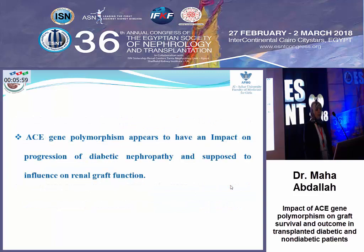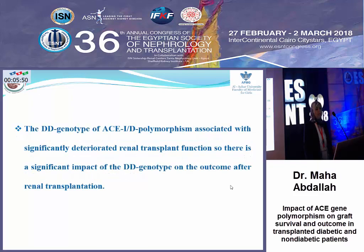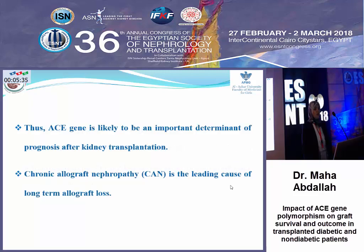ACE gene polymorphism appears to have an impact on the progression of diabetic nephropathy and is supposed to influence renal graft function. The DD genotype of ACE I/D polymorphism is associated with significantly deteriorated renal transplant function, so there is a significant impact of the DD genotype on the outcome after renal transplantation.